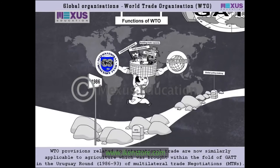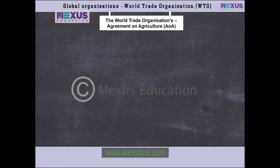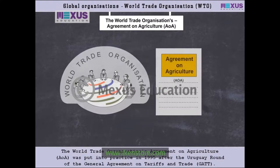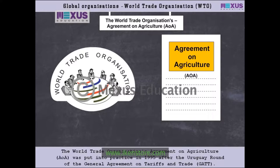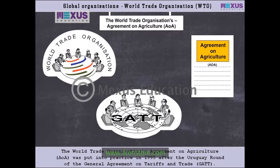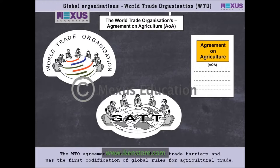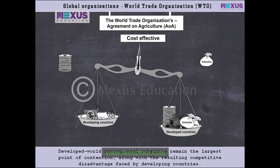The WTO's Agreement on Agriculture (AoA) was put into practice in 1995 after the Uruguay Round of GATT. The WTO agreement focused on reducing trade barriers and was the first codification of global rules for agricultural trade. Developed world agricultural subsidies remain the largest point of contention, along with the resulting competitive disadvantage faced by developing countries.